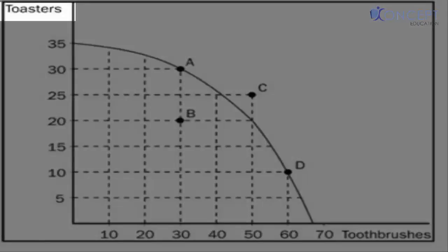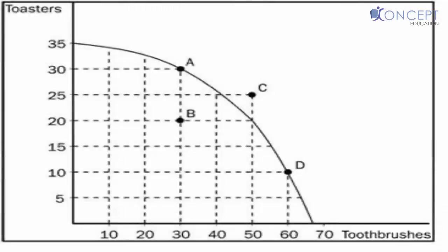Now let's get into the depth of PPC. To understand this, let's look at this graph. On the Y axis, we have toasters or on the X axis, we have toothbrushes. Now let's imagine for a moment that we have a shop and in our shop, we sell toasters and we also sell toothbrushes. Now on any ideal day, I would love to sell both as much as possible. I would love to sell the maximum amount of toasters and also the maximum amount of toothbrush. But the problem is to sell maximum amount of toasters and to sell maximum amount of toothbrush, I need to buy them. And to buy them, I need money and my money is limited.